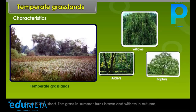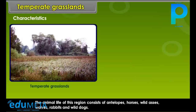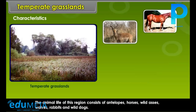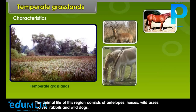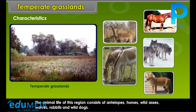Grass is very short. The grass in summer turns brown and withers in autumn. Cattle is reared in these grasslands. The animal life of this region consists of antelopes, horses, wild asses, wolves, rabbits and wild dogs.